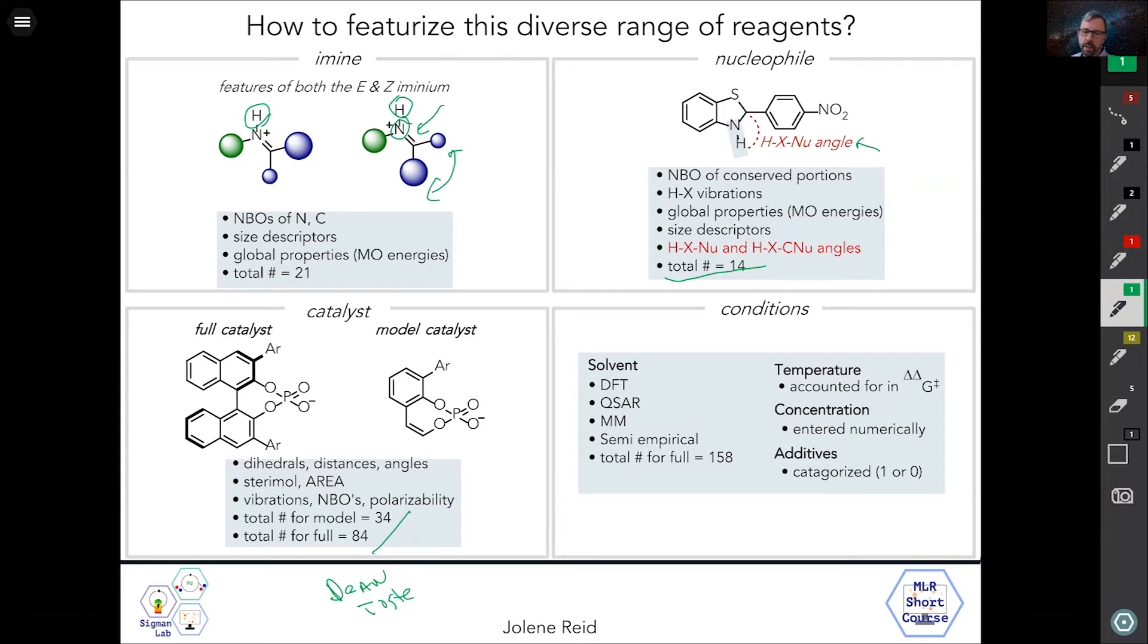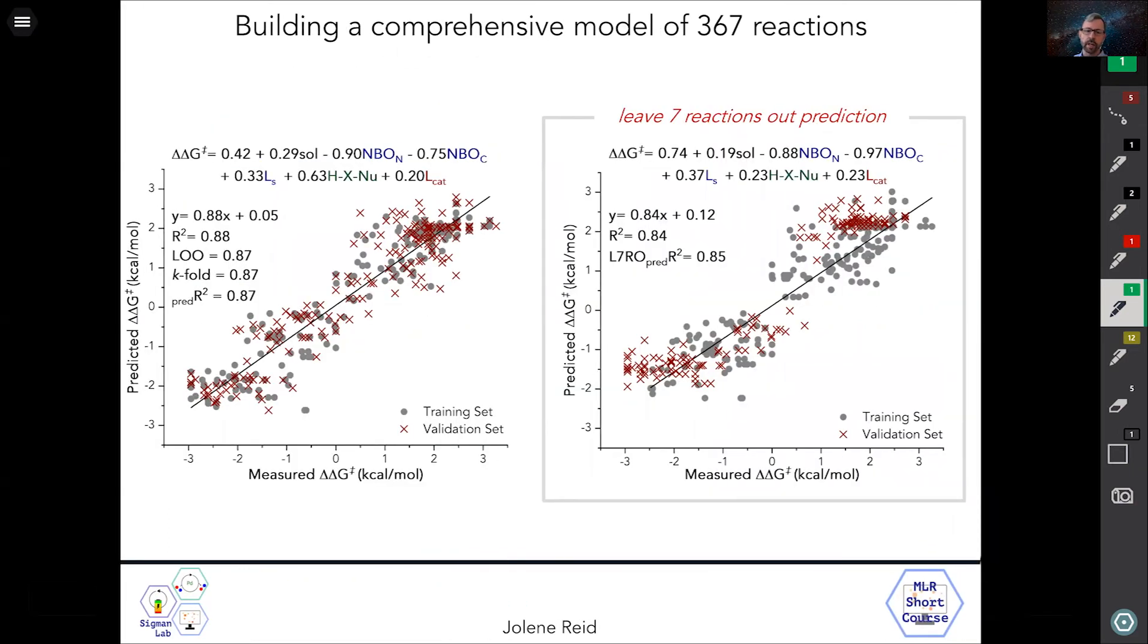And then finally, conditions—by far the most, I would say, difficult to give you physical meaning based on conditions. We use the combination of DFT, quantitative structure-activity relationship tools, molecular mechanics, semi-empirical—essentially the kitchen sink. You'll see that very few of these are actually important for asymmetric catalysis in these reactions. What's nice is temperature is already counted for in how you compute delta-delta-G double dagger. This is the enantiomeric selectivity, which is temperature dependent. We actually enter the concentration, if available, numerically, and additives we categorize as ones or zeros. So let's say molecular sieves are in there to dehydrate the reaction—we call that a one; if it doesn't have it, we give it a zero.